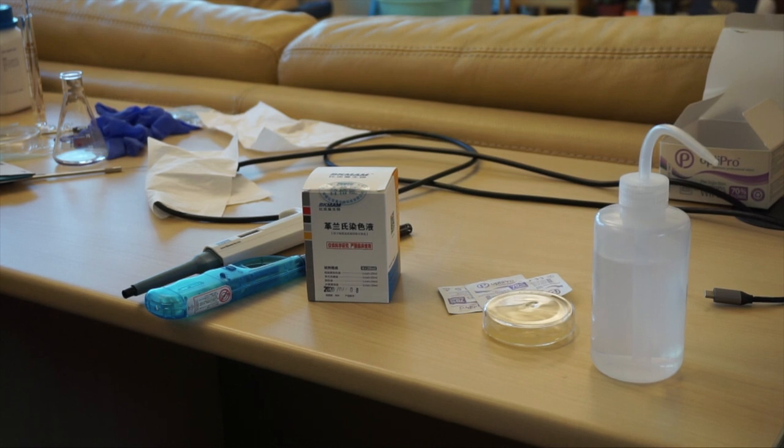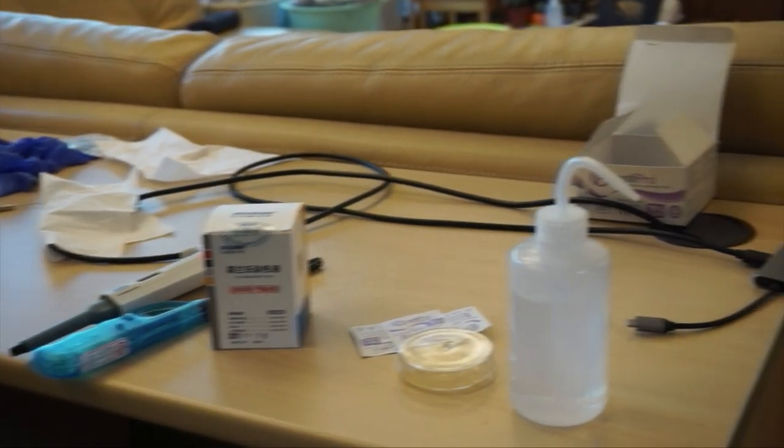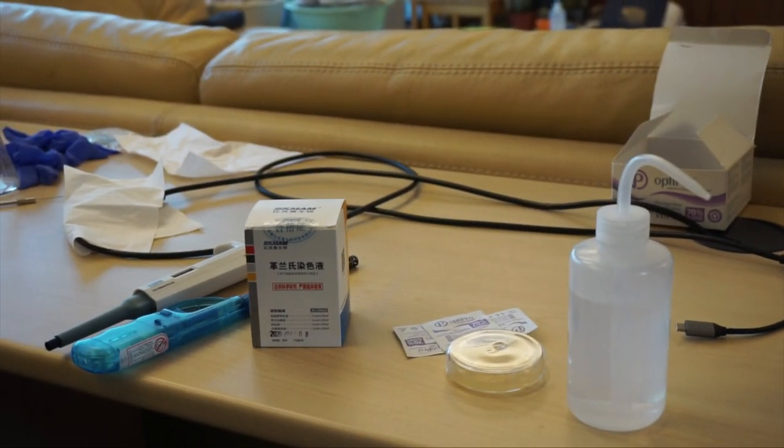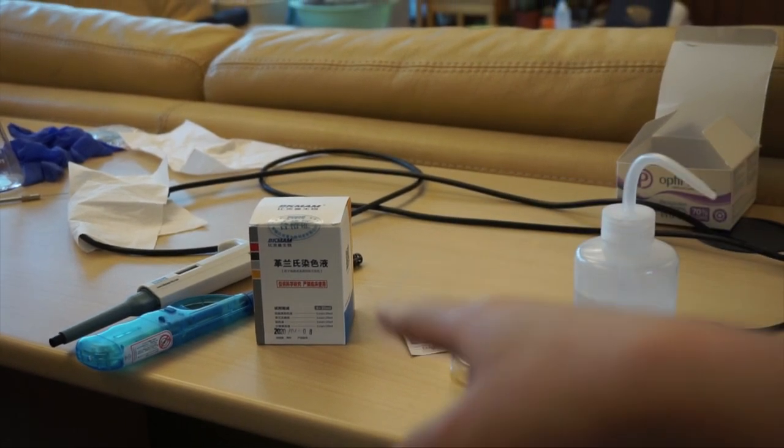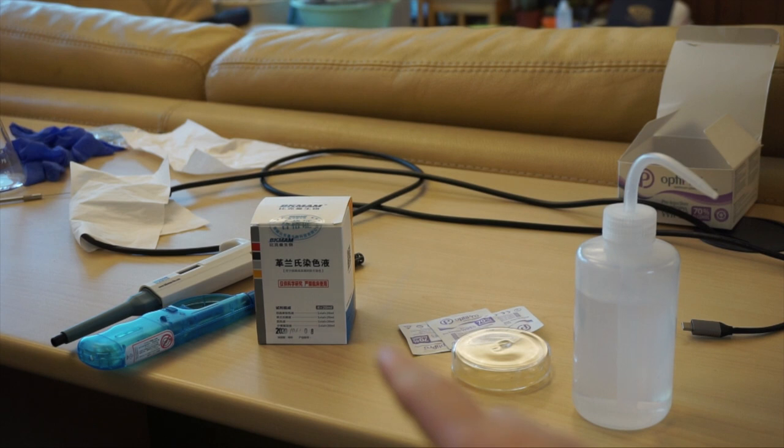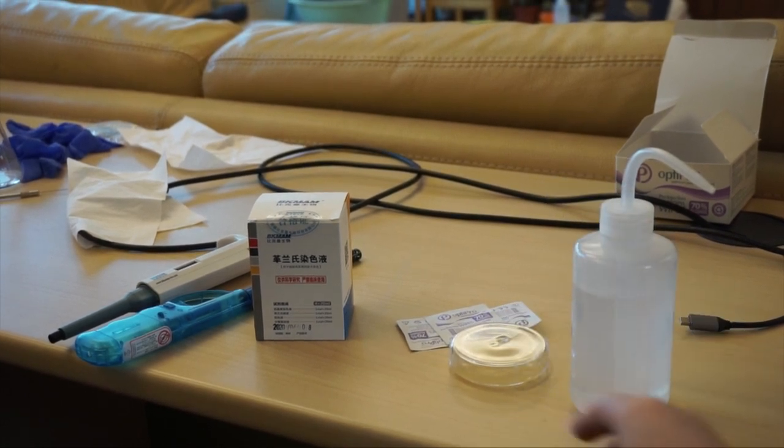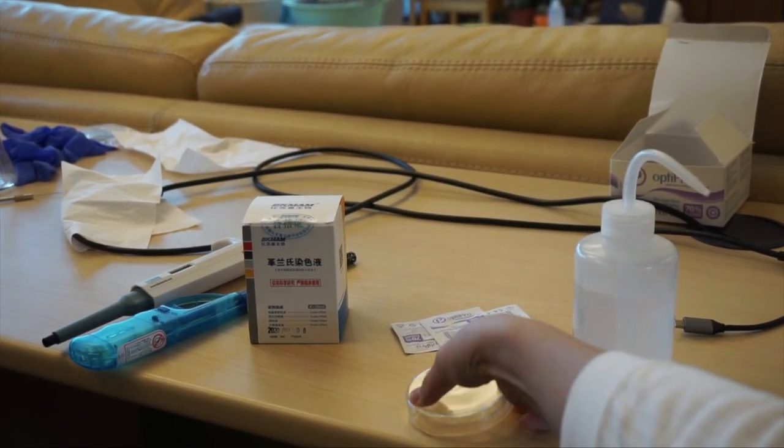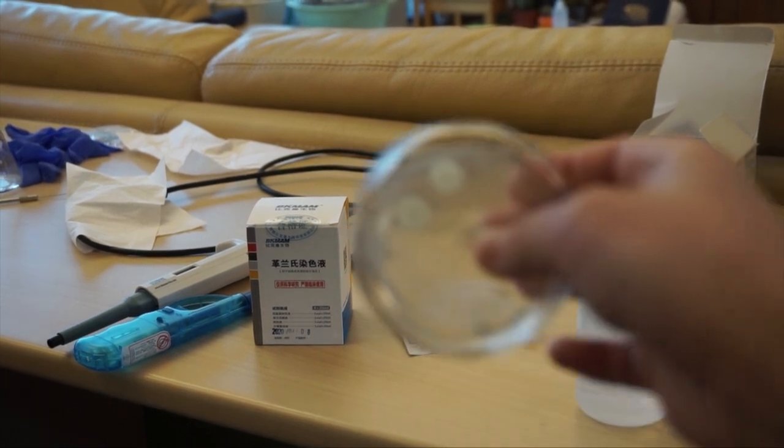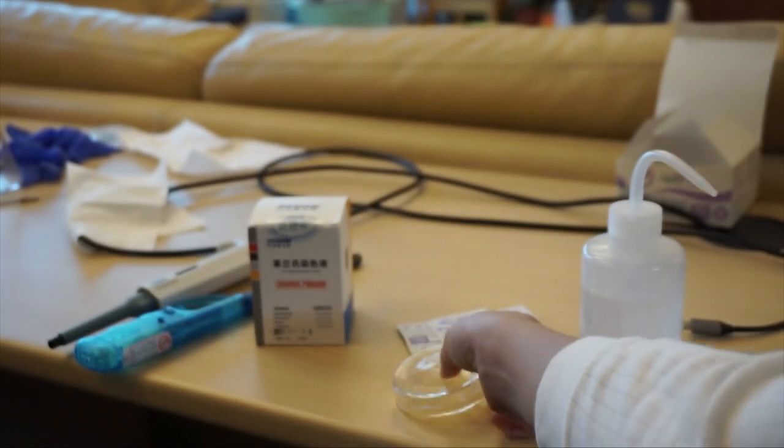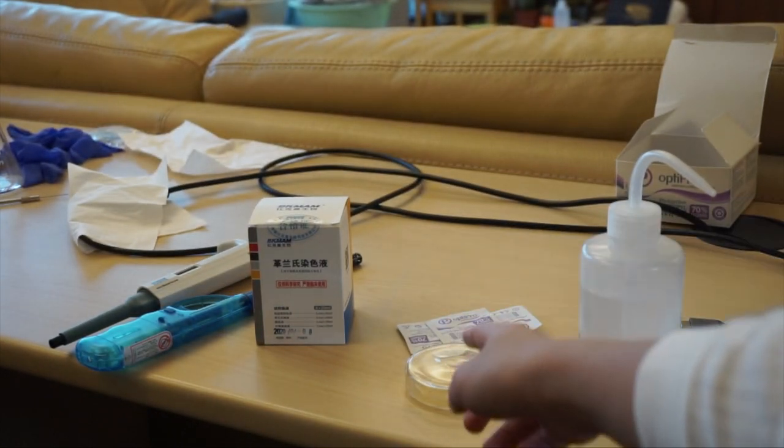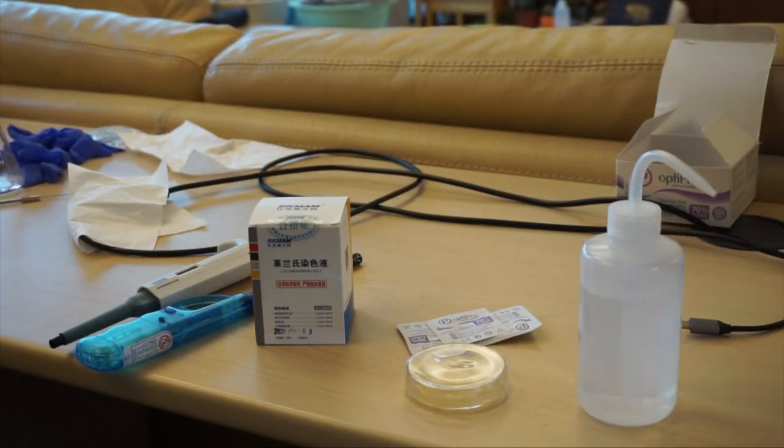So these are the materials we're going to need. This is stain. I bought that on a website. Distilled water, your bacteria colony, and some alcohol wipes for cleanup.